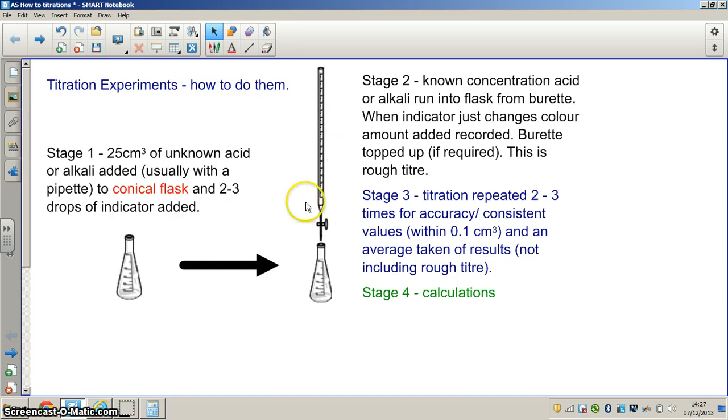So let's just recap. If we've got a known concentration acid in here we put an unknown concentration alkali in here. If we've got an unknown acid in here we put a known alkali in here. It doesn't really matter which way around you have it. But whichever way you go you have one unknown either in the burette or the conical flask and one known vice versa.